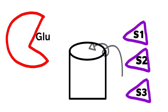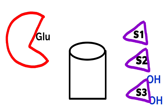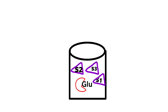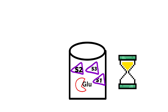Ten molecules each: ten molecules of substrate one with a hydroxyl group, ten molecules of substrate two without a hydroxyl group, and ten molecules of substrate three with two hydroxyl groups are added to the enzyme. This mixture is kept aside for some time.